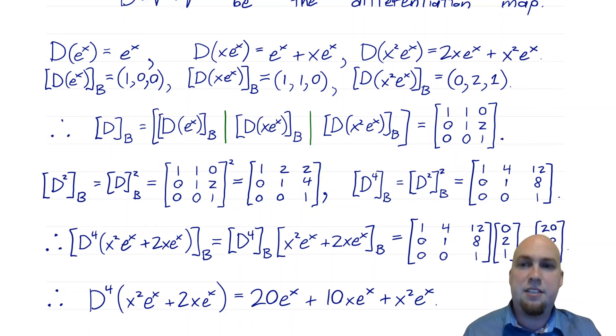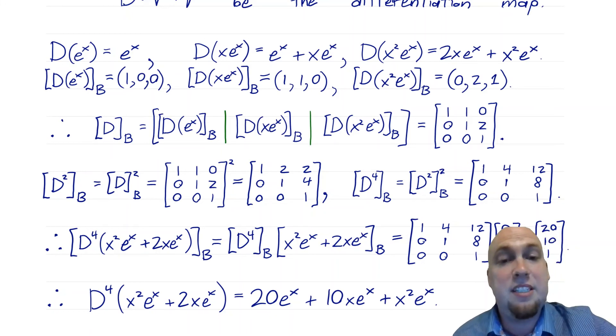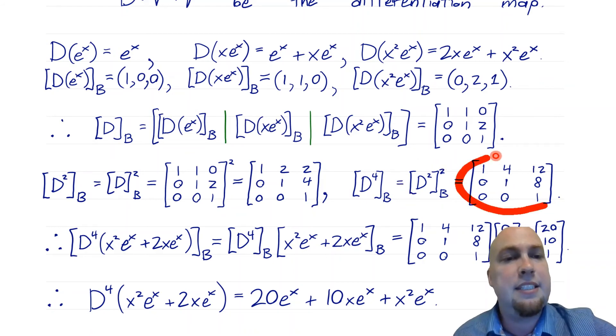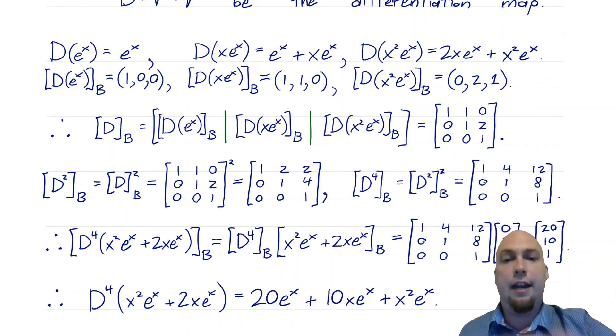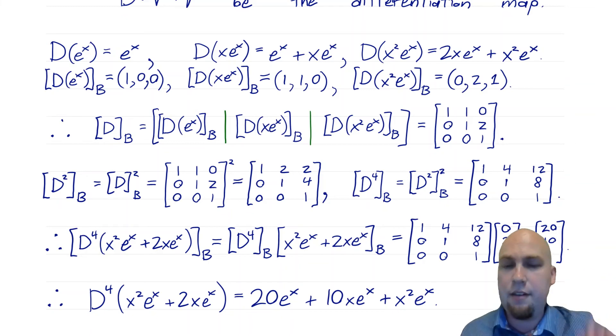That gives us the standard matrix of D squared. We want the standard matrix of D to the fourth power, so we square again — multiplying the square by itself.